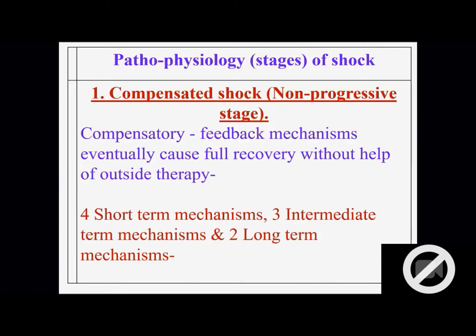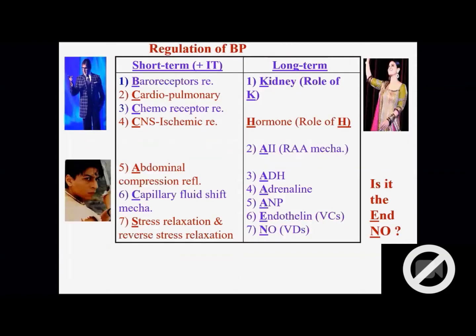Actually my goal is to keep these two diagrams in mind and I think you can make out everything. In the compensated stage we are having compensatory negative feedback mechanism. In this case, all blood pressure regulating mechanisms can be written. At least four short-term nervous reflexes, three intermediate-term and two long-term. All the names - short-term, long-term - name of all these mechanisms should be written.